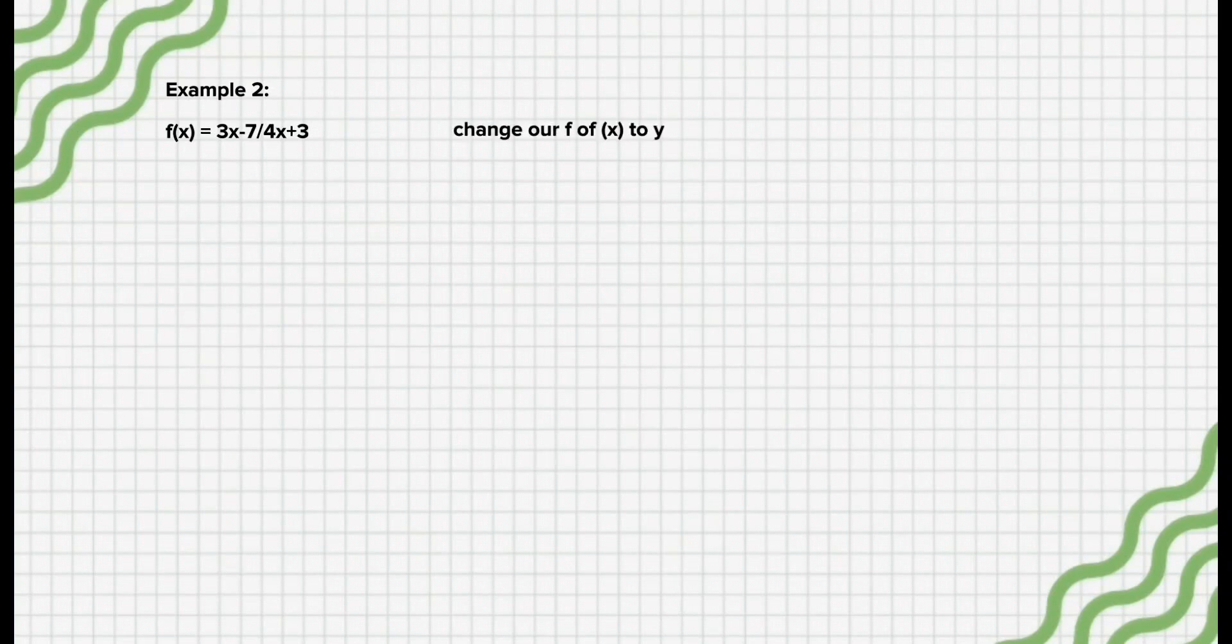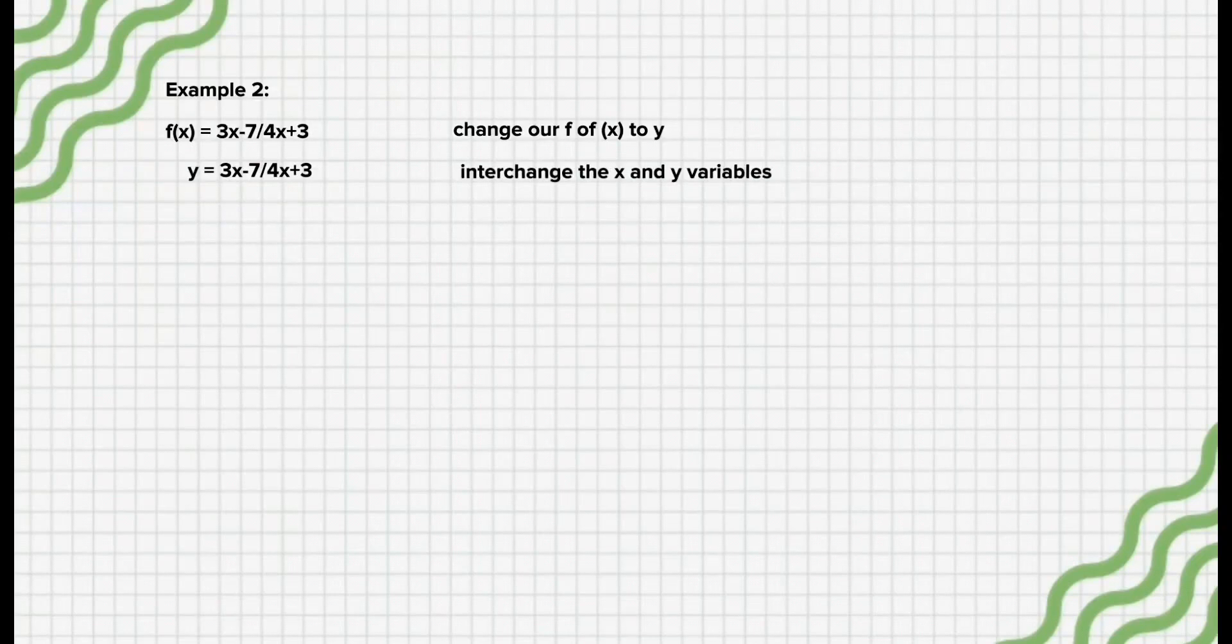Example 2: Let us have the given f(x) = (3x - 7)/(4x + 3). First, we change our f(x) to y: y = (3x - 7)/(4x + 3).